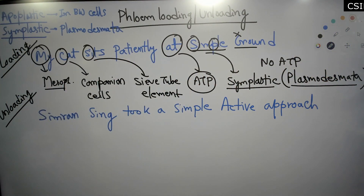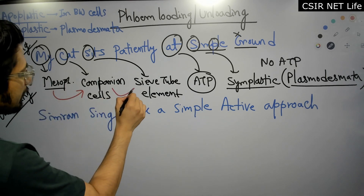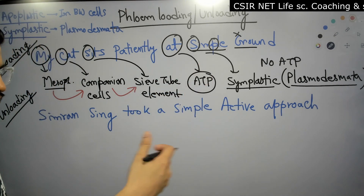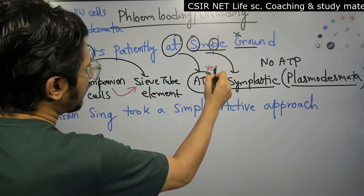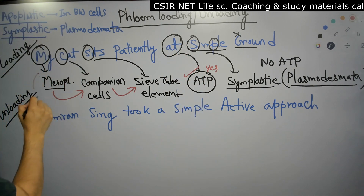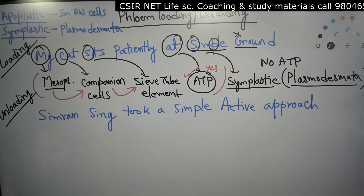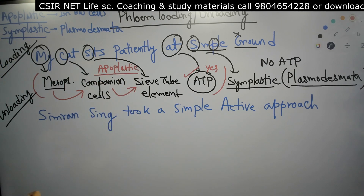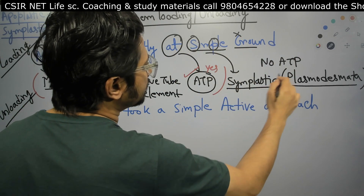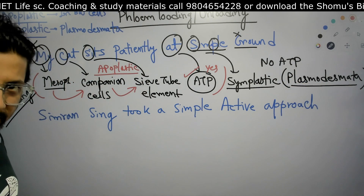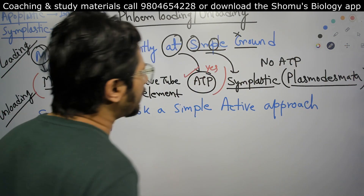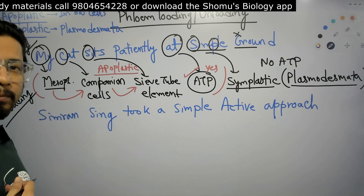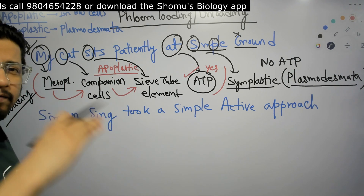In apoplastic transport, the transfer goes from mesophyll cells to companion cells, then from companion cells to sieve tube elements, and then it is donated to the sink — the individual cells of the plant. This requires ATP. In symplastic transport (simple ground), no ATP is required, and it involves plasmodesmata. Every piece of information is encoded in the sentence, which is why these mnemonics are slightly longer but completely comprehensive.